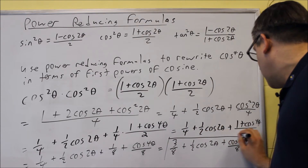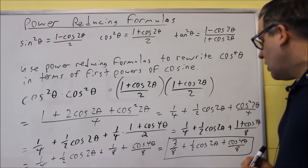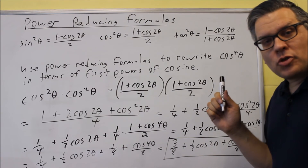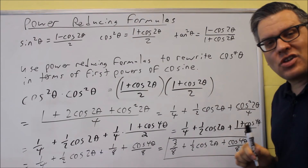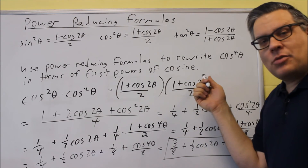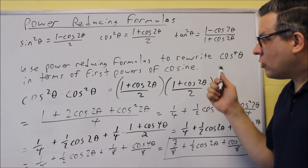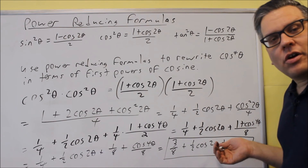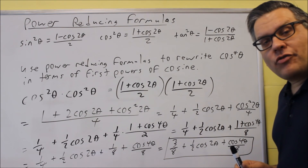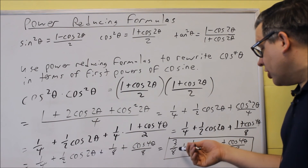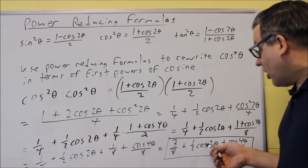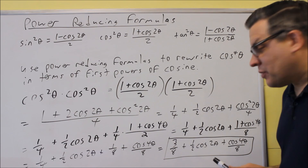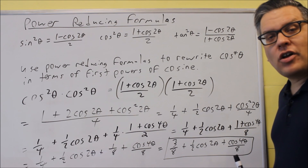So our final answer is three-eighths plus one-half cosine(2θ) plus cosine(4θ) over eight. We couldn't leave it in the earlier multiplied form because that's not acceptable — what's required is a sum or difference of cosines raised to the first power. Now we have separate terms with cosines both raised to the first power, so this is the final answer.